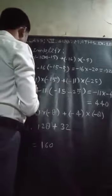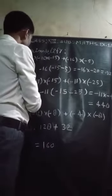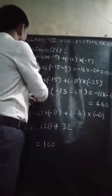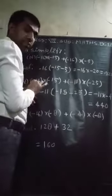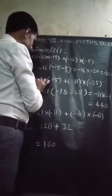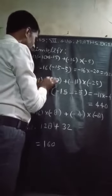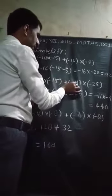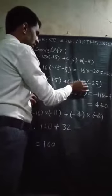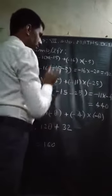Then question number 5, inside question number 6: minus 11 into minus 15, plus minus 11 into minus 25.